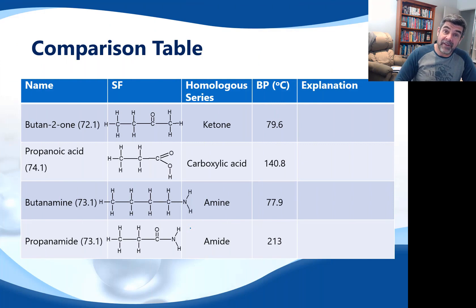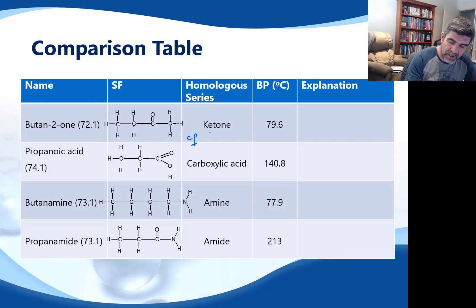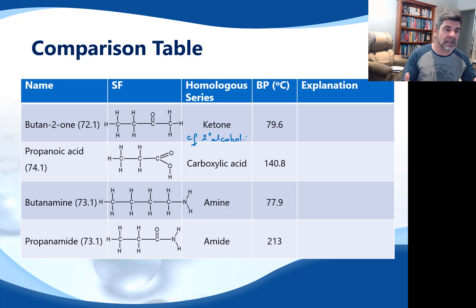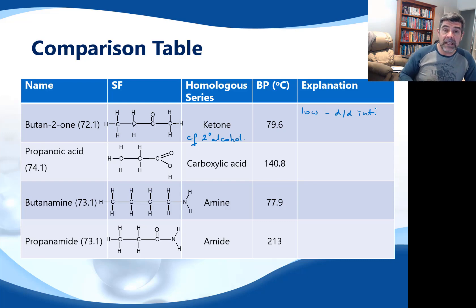When we compare the other functional groups, the ketone is best compared with a secondary alcohol. In both cases, the relevant group is on a central carbon rather than an end carbon — the OH for the secondary alcohol and the double-bonded oxygen for the ketone. When we make those comparisons, we find a lower boiling point for the ketone, explained again by dipole-dipole interactions creating less attractive force between molecules than hydrogen bonding.